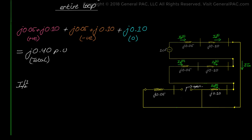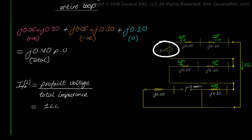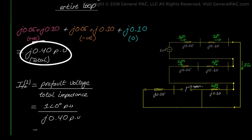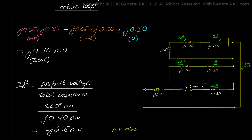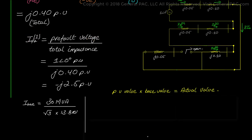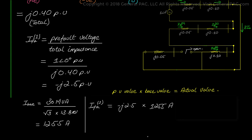The positive sequence current equals the pre-fault voltage of 1 per unit at angle 0 degrees divided by j0.40 per unit, giving us -j2.5 per unit. To find the actual current in amperes, the base current equals 30 MVA divided by the square root of 3 times 13.8 kV, which results in 1255 amps. Multiplying by -j2.5 gives us the actual positive sequence current of 3138 amps at -90 degrees.